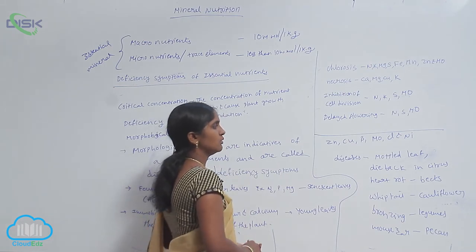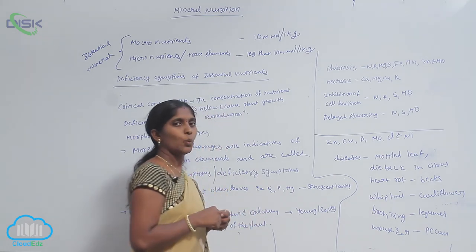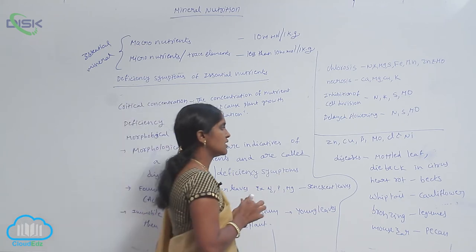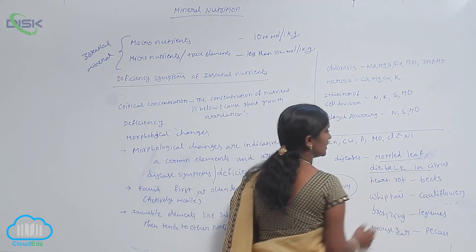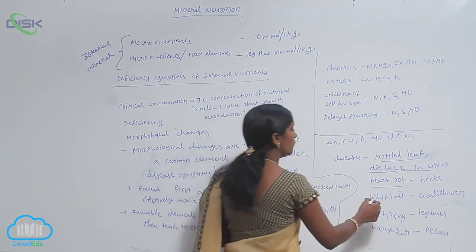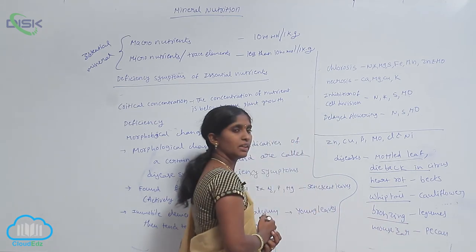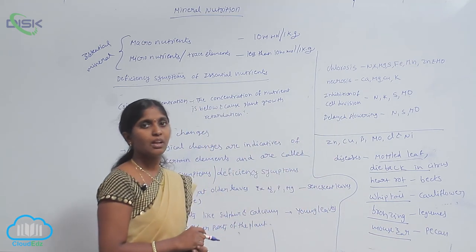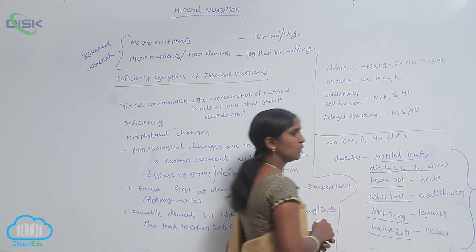Zinc, copper, boron, molybdenum, chlorine, and neon. When they are deficient in the plants, they lead to some diseases. What are the diseases? Malted leaf disease, dieback disease in citrus, hot rot disease in beets, viptyle disease in cauliflower, bronzing in legumes, mouse ear disease in pecan plant. The nutritional deficiency causes multiple number of diseases.